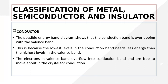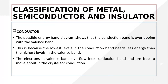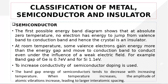We have discussed the energy band diagram of conductors, where the conduction band overlaps with the valence band. Metals are conductors in which the conduction band overlaps with the valence band. When electrons are in the conduction band they are free to move in the crystal and can easily conduct electricity.